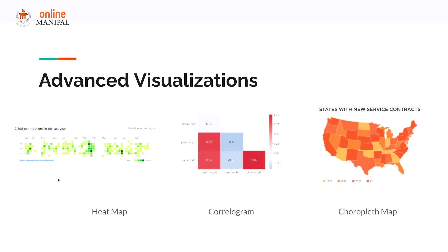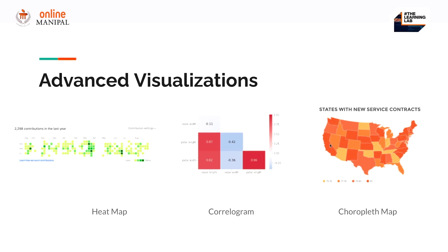Next we have a heat map — GitHub users will recognize it well. A heat map shows contributions over the period of a year and represents categorical data using the intensity of color and the size of the tile. A variant is the correlogram, often used in exploratory data analysis when building predictive models to understand relationships between variables. Another variation is the choropleth map, which shows the distribution of values over a geographical area using color codes.